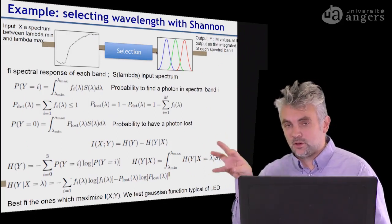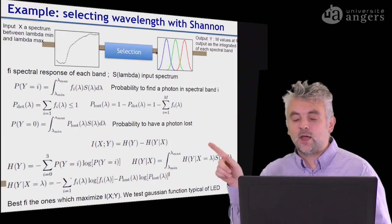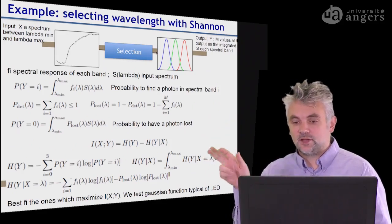So if you want to have a gray level image, you will have only one output at the end. If you have an RGB image, you will have three outputs and so on.